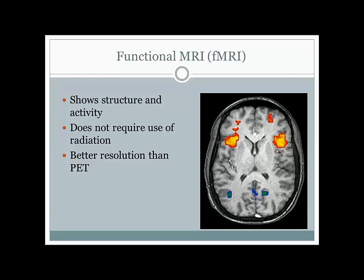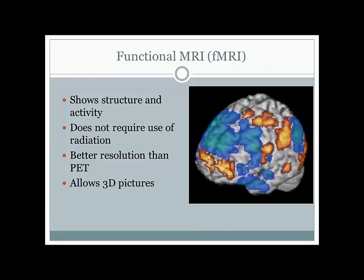Just as the MRI is capable of taking 3D pictures, the fMRI is also capable of taking 3D pictures, and it would look something like this. You get a chance to see in much greater detail and across a much broader scale exactly where the activity is coming from.